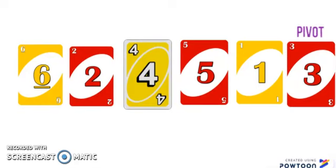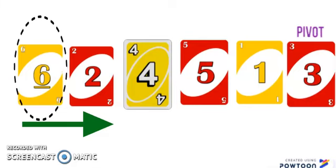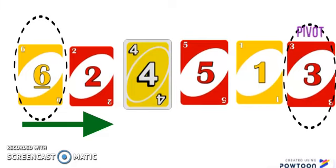I'll scan the set of cards starting from the left to find the first card that is greater than the pivot. Looking at the first card, it has a value of six. My pivot has a value of three. Since six is greater than three, I've found the card from the left.